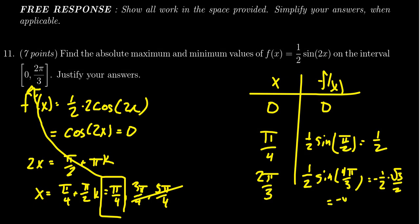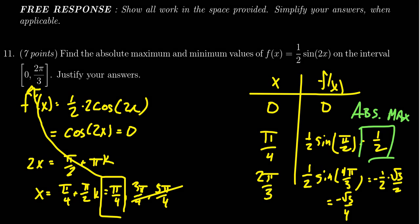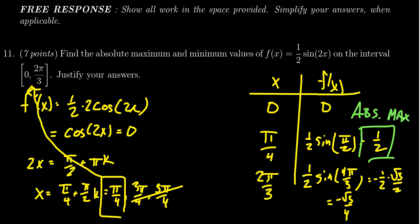The largest value present is the maximum. The absolute maximum value is y = 1/2, obtained at x = π/4. The absolute minimum value is -√3/4, obtained at x = 2π/3.